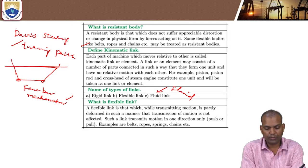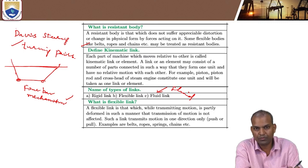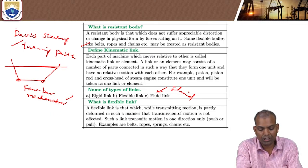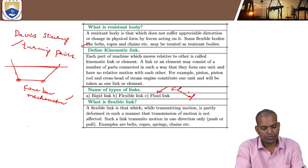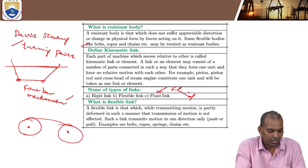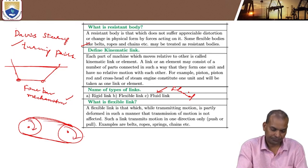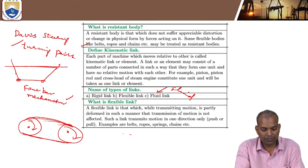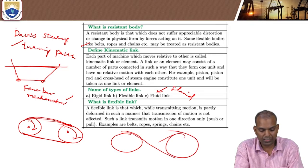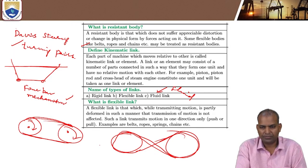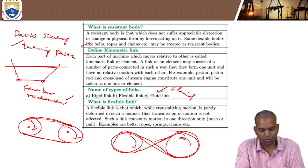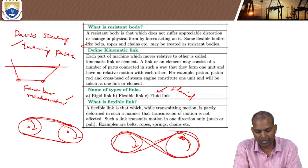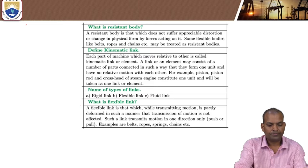A flexible link is one which transmits motion and is partly deformed in a manner such that the transmission of motion is not affected. Belts are examples of flexible links — a belt transmits motion or torque from one pulley to another with slight deformation that does not affect the motion. In an open belt drive, the two pulleys move in the same direction. In a cross belt drive, motion is transmitted in the opposite direction — if the input is clockwise, the output is counterclockwise.